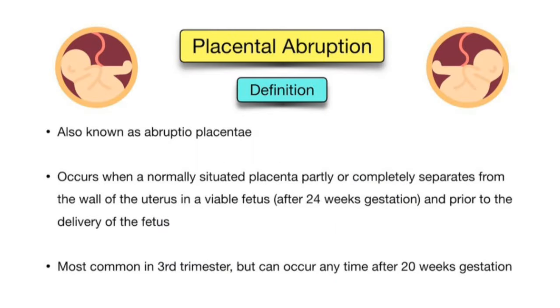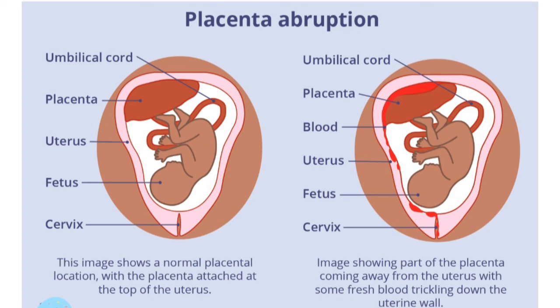Placental abruption is also known as abruptio placenta. It is an obstetric condition involving premature placental detachment from the endometrium — the separation can be partial or complete. It is a rare but serious condition, occurring in approximately one percent of pregnancies, with severe cases in only 0.1 percent. It is one of the most important causes of obstetrical and neonatal morbidity.